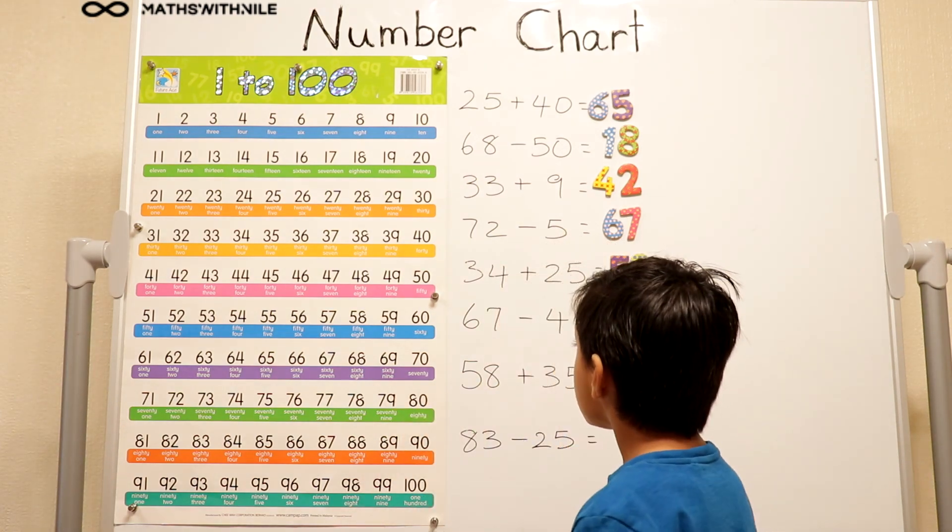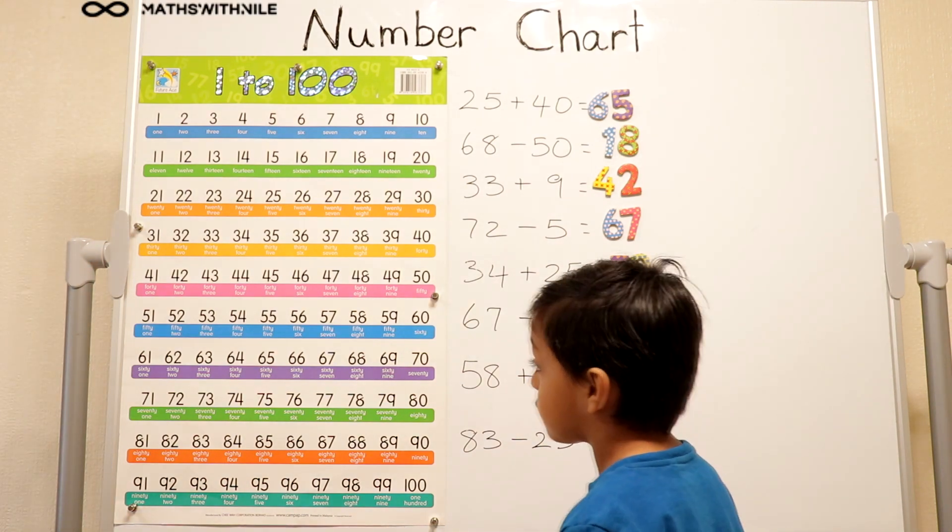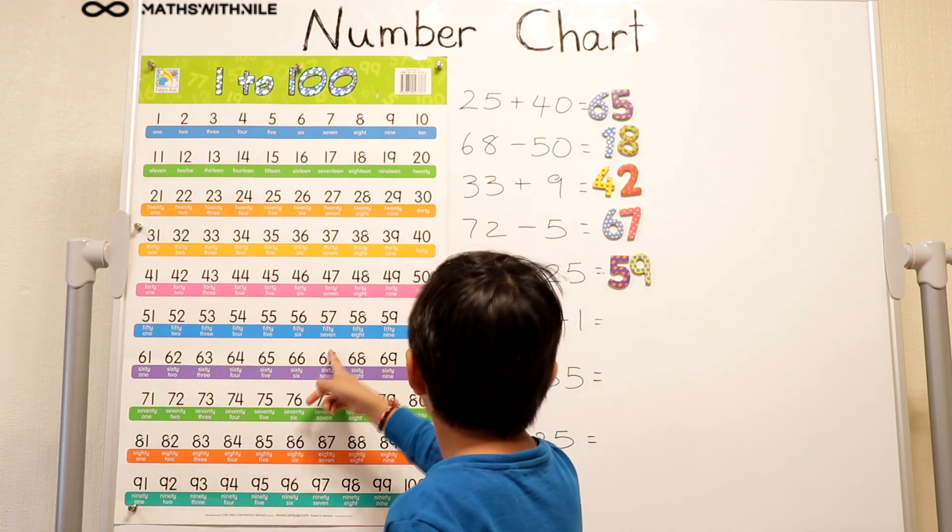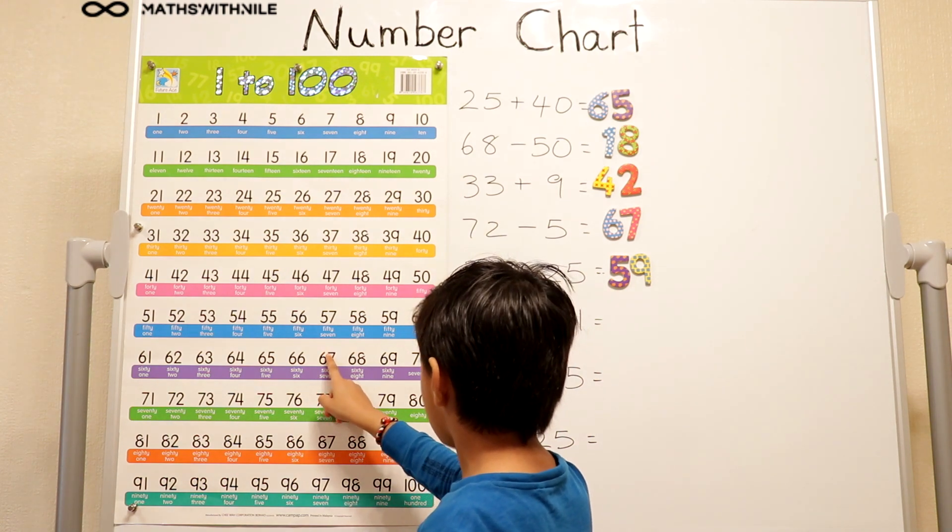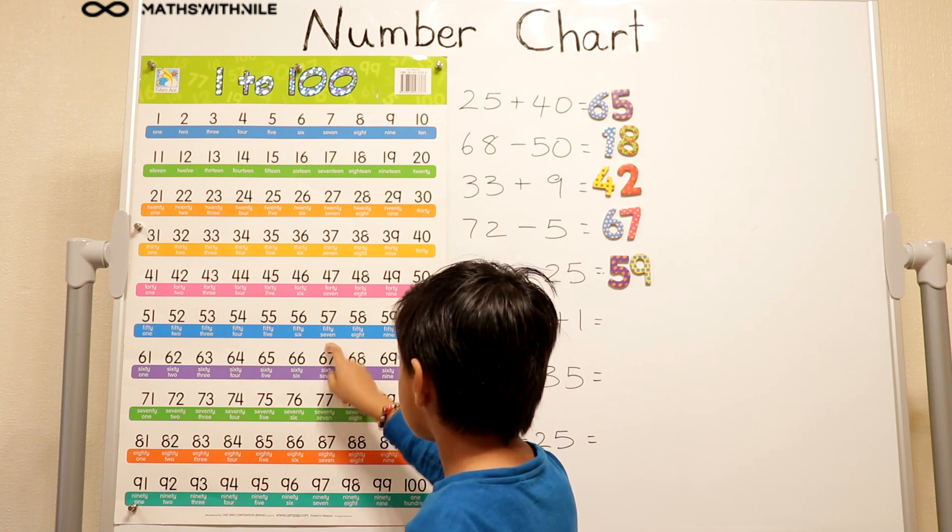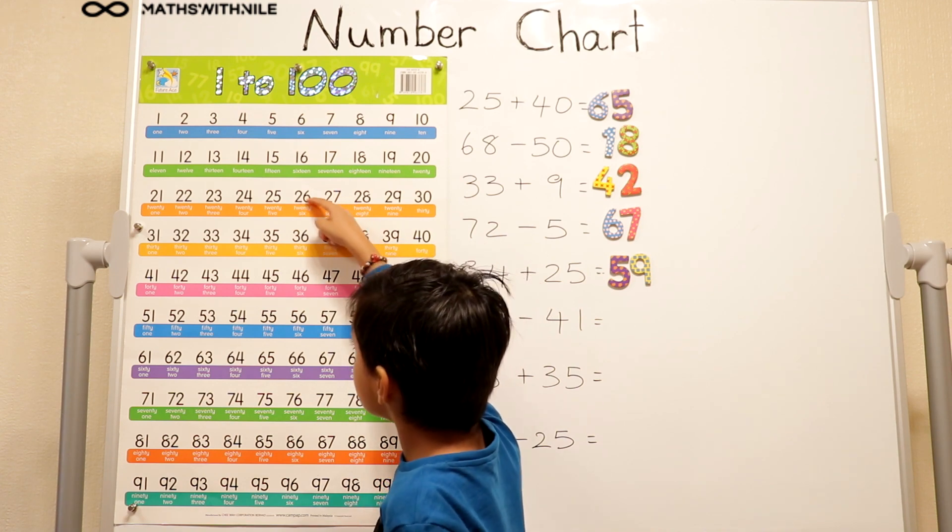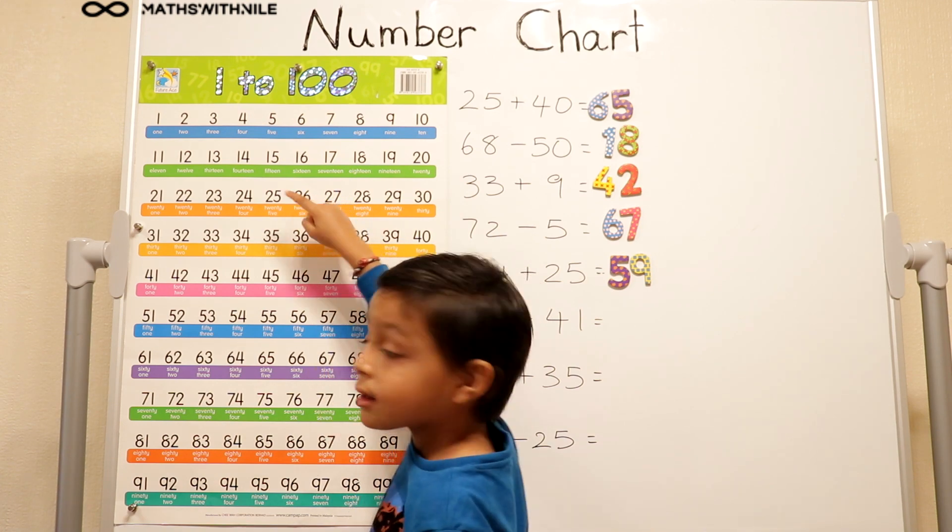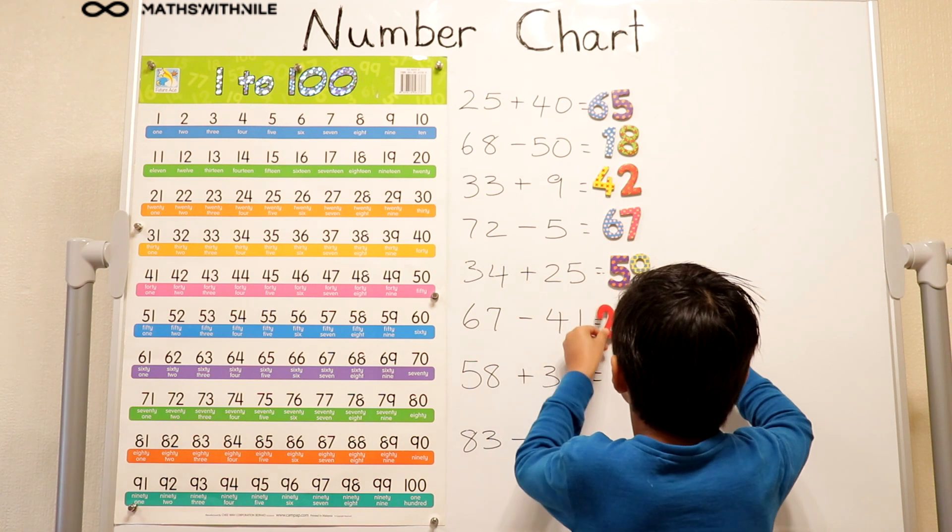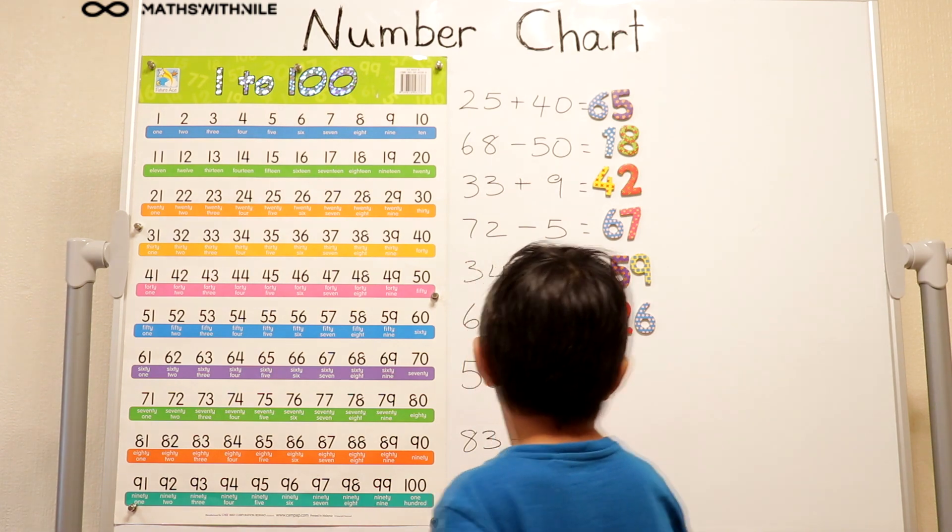And then our next question is 67 take away 41. So we have to find 67 first. Which is right here. And then we take away 41. So we go up 4 times and then we take away 1. So 10, 20, 30, 40 and then 1. And it equals 26. So I'm going to get my 26. Okay. That's correct. Can we have a look at the next question.